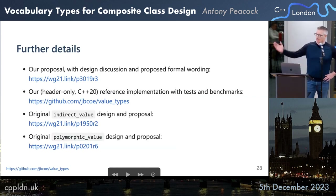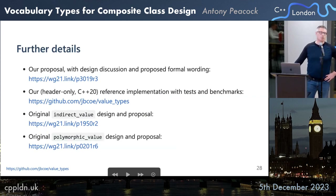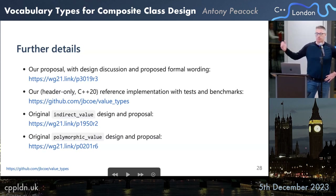Here are the links to the proposals: the main proposal P3019 and also the previous designs. More importantly, we have an open-source GitHub repository where we're developing this. Developers from GCC and Clang have gotten involved in giving input at this early stage, which has been phenomenal. You can use these types now — we have C++20 implementations and also C++14 backwards-compatibility implementations, all under the MIT license. Please try them out, file issues on GitHub, and tell us what you like and don't like. Now is your chance to give feedback before these get into the standard.